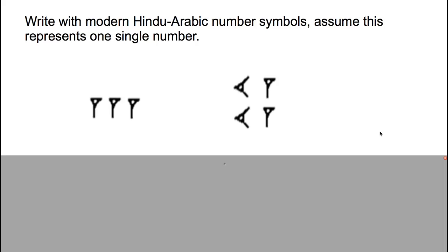Write the modern Hindu-Arabic number symbols for this number. Assume this represents one single number. It looks like two groupings, but if we take this to be one single number with two groupings, we understand that it's a positional number system. What would this be in our modern way of writing? What number is this? Pause the video, see if you can figure it out, and then check it.